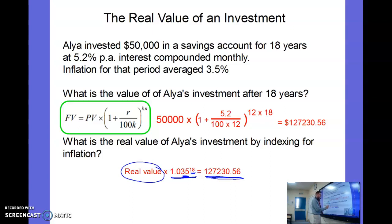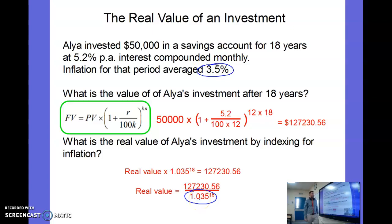If something times 1.035 to the power of 18 equals this, to work backwards I'm going to divide. So I take my value and I divide it by 1.035 to the power of 18 - that's my inflation rate as a decimal to the power of the number of years - that's where those values have come from.